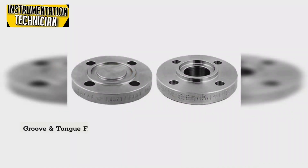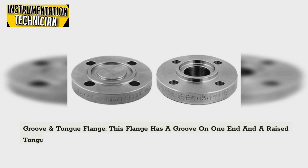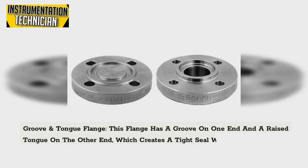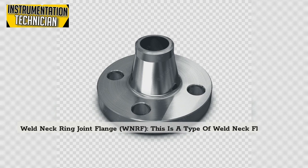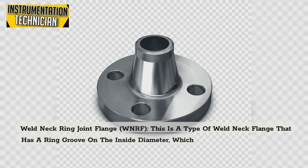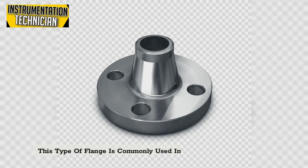Groove and tongue flange: This flange has a groove on one end and a raised tongue on the other end, which creates a tight seal when the two flanges are bolted together. Weld neck ring joint flange (WNRF): This is a type of weld neck flange that has a ring groove on the inside diameter which accommodates a metal ring gasket and is commonly used in high pressure applications.